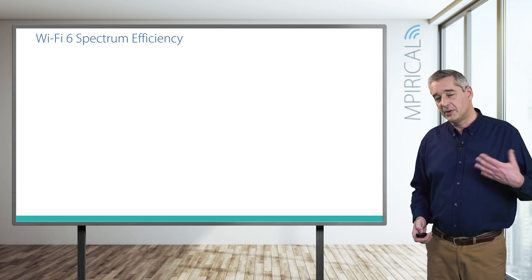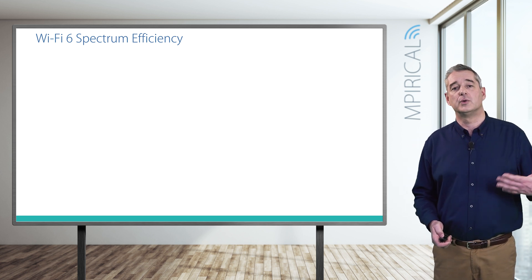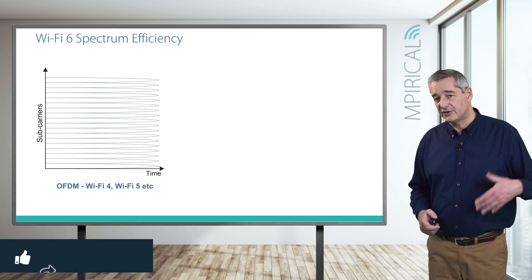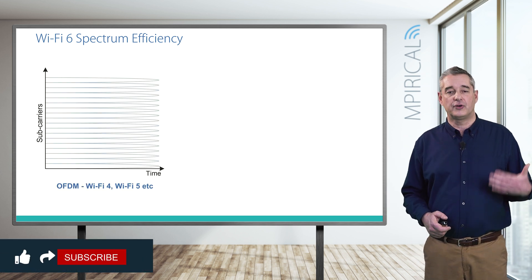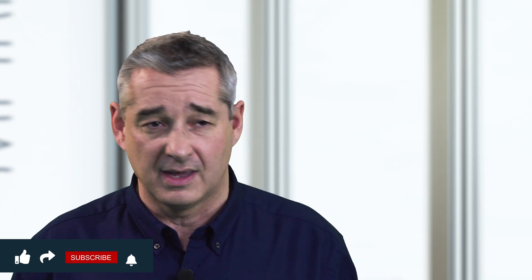Let's put that into practice and see the benefits of transitioning over to an OFDMA-based approach. Let's begin by looking at how it would work on straight OFDM in the case of Wi-Fi 4 and Wi-Fi 5. We are ignoring multi-user MIMO here — where we can support multiple users by putting them on multiple streams — and we can also do this with OFDMA, but let's put that to one side for the moment.